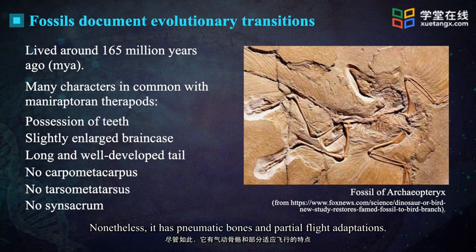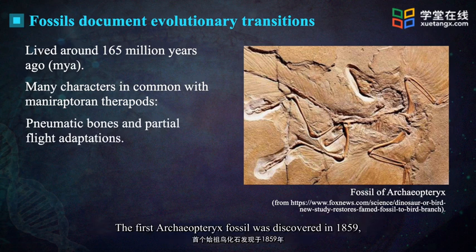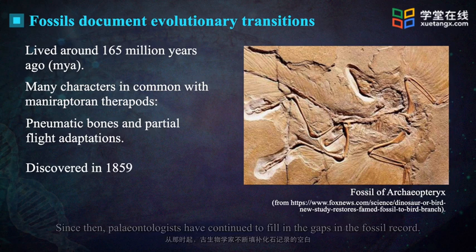Nonetheless, Archaeopteryx has pneumatic bones and partial flight adaptations. The first Archaeopteryx fossil was discovered in 1859, the year Darwin published On the Origin of Species. Since then, paleontologists have continued to fill the gaps in the fossil record, and today the fossil record is far more complete.